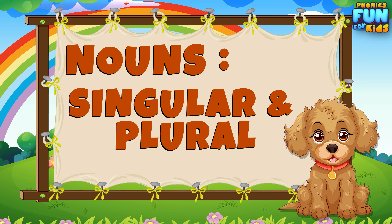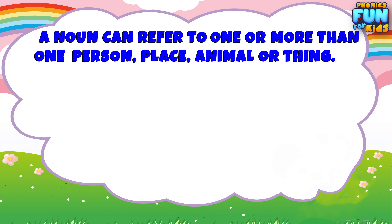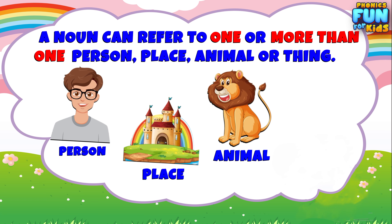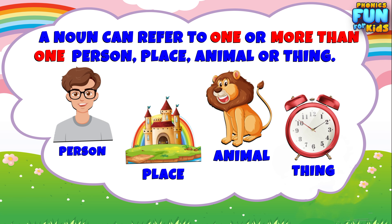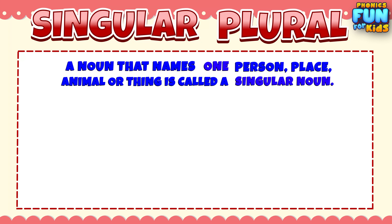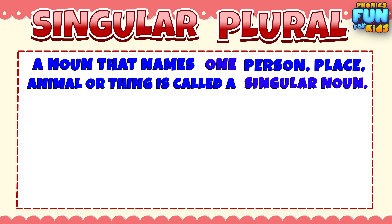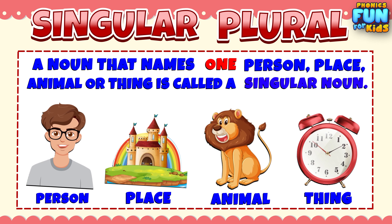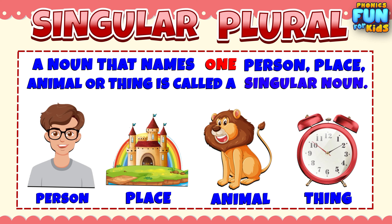Today we learn nouns — singular and plural. A noun can refer to one or more than one person, place, animal, and thing. A noun that names one person, place, animal, and thing is called a singular noun.